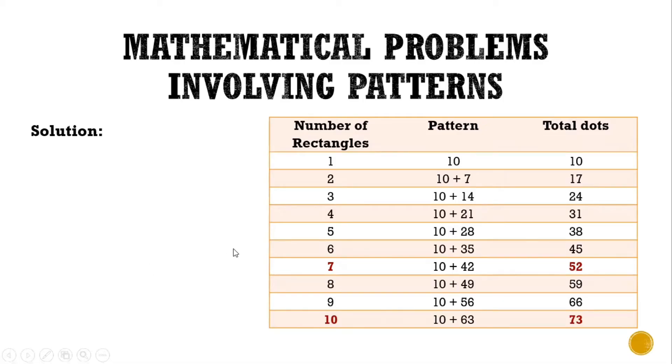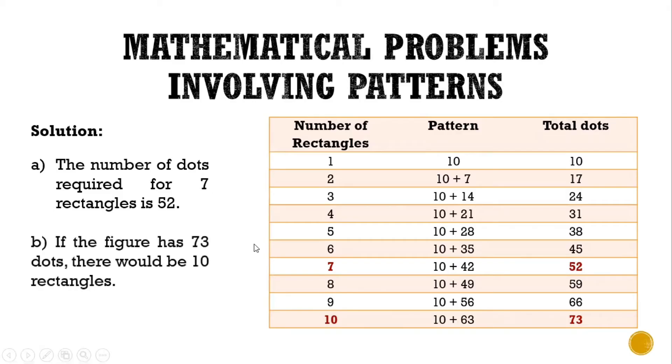To answer the question, here's the solution. The number of dots required for 7 rectangles is 52. We have 10 plus 42, which equals 52. For the second question, how many rectangles for a total of 73 dots? According to our table, it is indicated that there are 10 rectangles for a total of 73 dots. That's just one way to find a pattern.